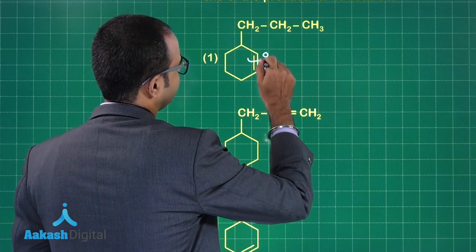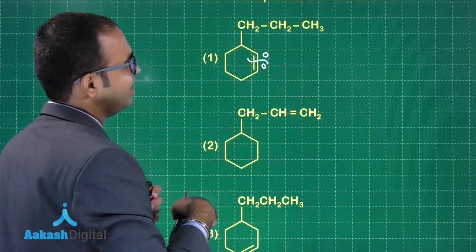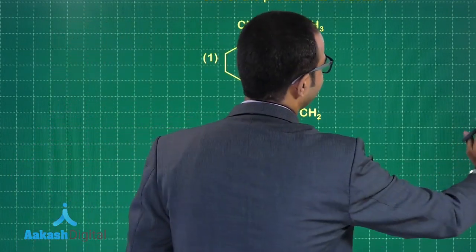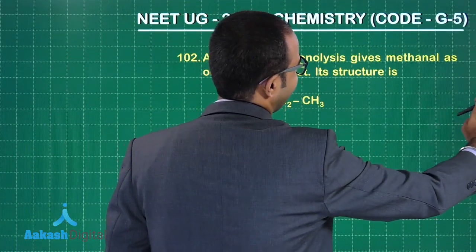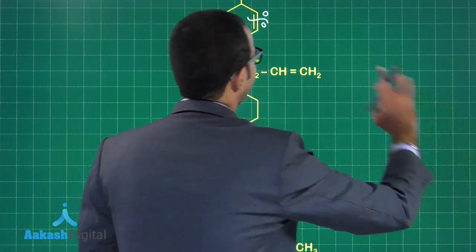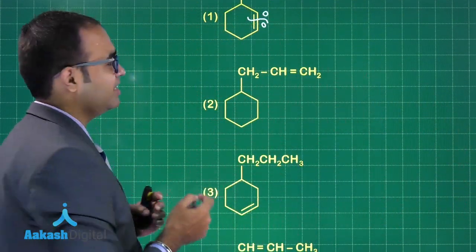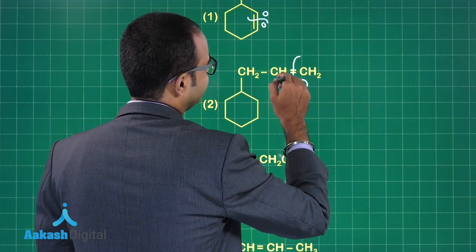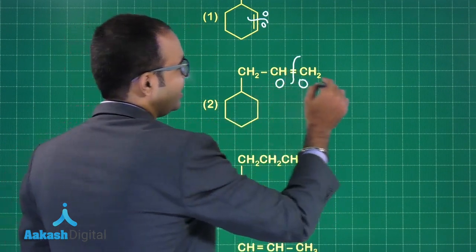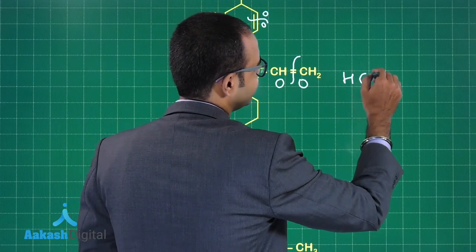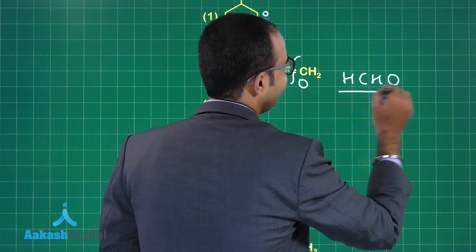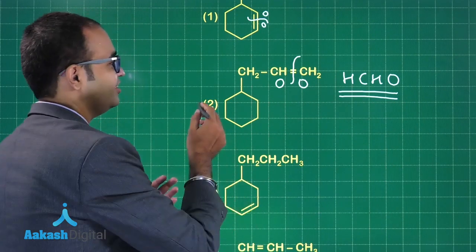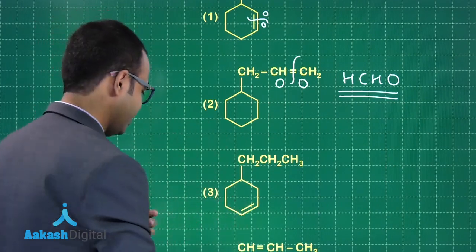Am I getting a methanol? What is the question saying? Methanol. Am I getting a methanol in the first case? No, I'm not getting a methanol. Break this double bond, put oxygen on this side, put oxygen on this side. Am I getting a methanol over here? Is this giving me a methanol? Yes. So what is the answer? Answer is option two.